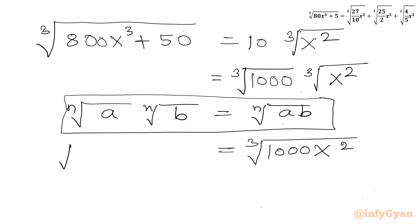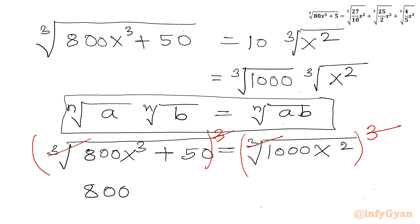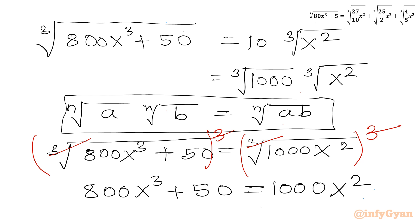LHS is cube root of (800x³ + 50) and RHS is cube root of (1000x²). Since both sides have a cube root, we cube both sides. The cube root and power 3 cancel on both sides, giving us: 800x³ + 50 = 1000x².